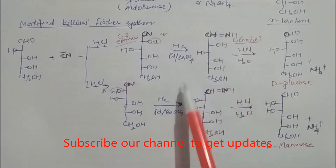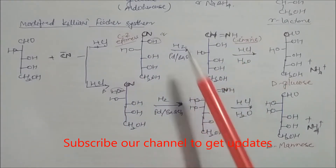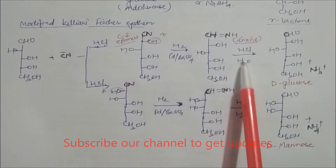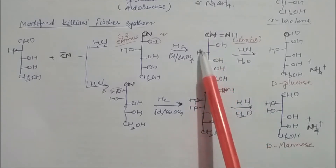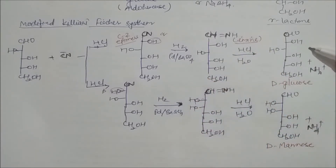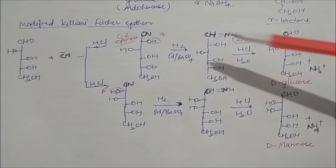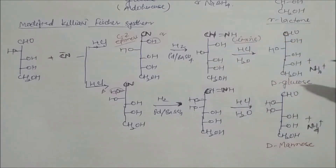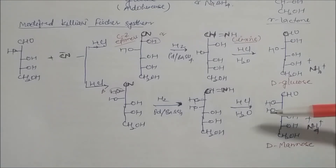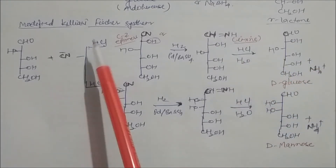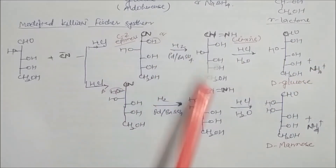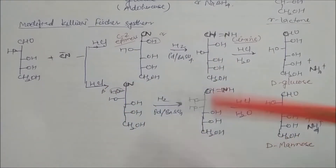After forming the imine, acid hydrolysis converts it into two products: glucose and mannose, which are diastereomers of each other. Ammonia is released as a byproduct — the imine nitrogen converts to an ammonium ion. This is the modified Kiliani-Fischer synthesis, distinguished from the original by the direct reduction to imine and hydrolysis pathway.